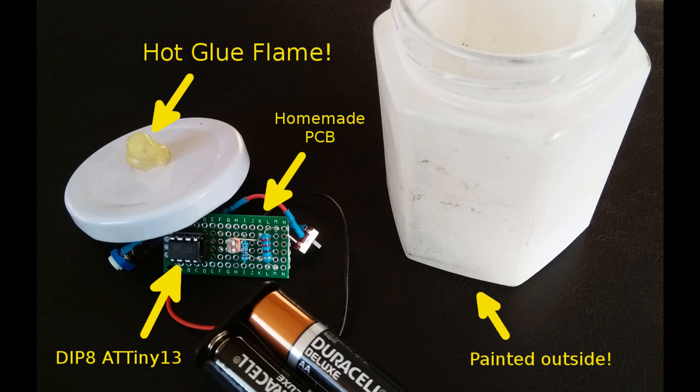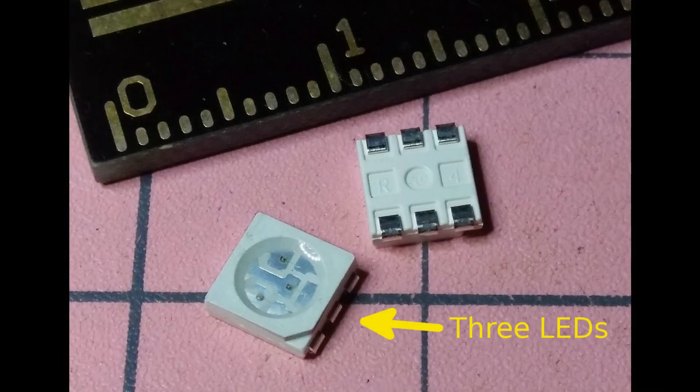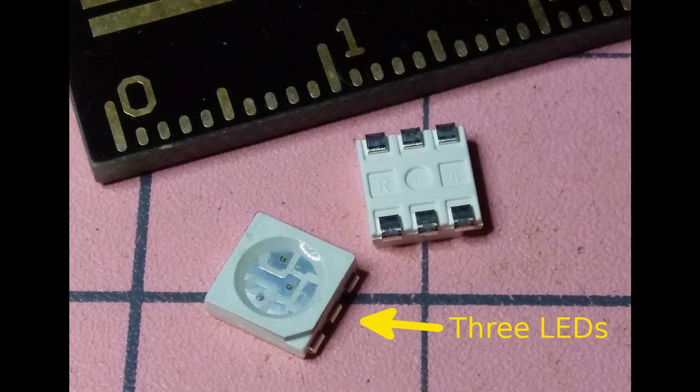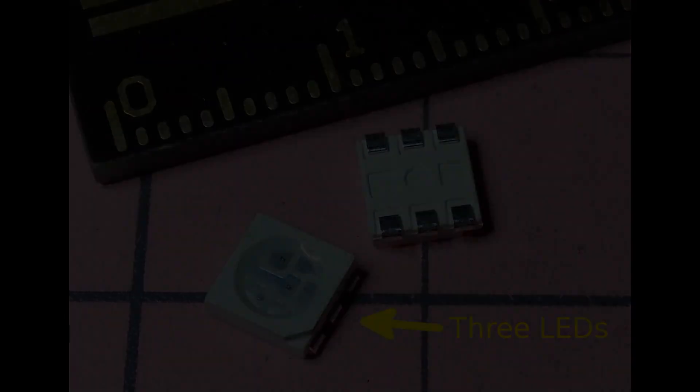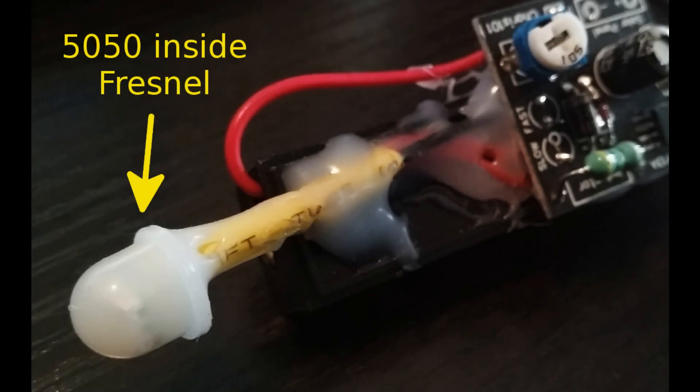Until I happened upon these 5050s which are actually three LEDs in one. You can see the pads there for VCC and ground, so the possibility of altering them independently from the PCB and then going out to the 5050 which is all encased inside of a Fresnel lens to diffuse it.